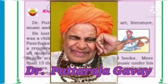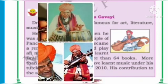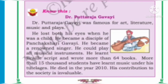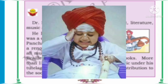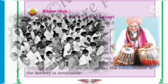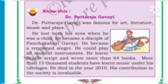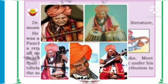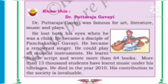We all know Dr. Puttaraja Gavai, who was famous for art, literature, music and plays. He lost both his eyes when he was a child but became a renowned singer and could play all musical instruments. He learnt Braille script and wrote more than 64 books. He has trained more than 15,000 students in music. Physical handicap can be easily overcome with our willpower, self-confidence and persistent efforts.